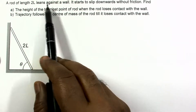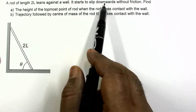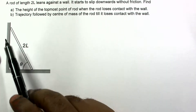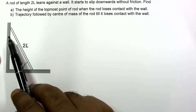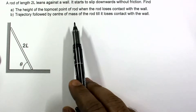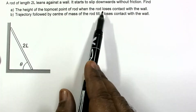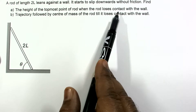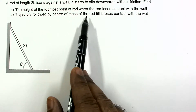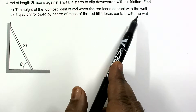In this problem, a rod of length 2L leans against a wall. It starts to slip downward without friction — the wall is smooth and the floor is also smooth. We have to find the height of the topmost point of the rod when it loses contact with the wall, and also the trajectory followed by the center of mass of the rod till it loses contact with the wall.